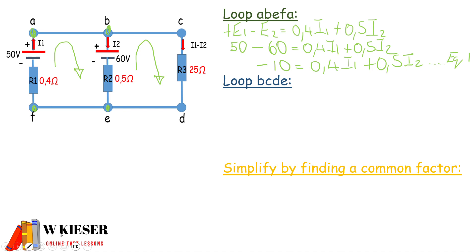The next equation will be loop B-C-D-E-B. Once again we move in a clockwise direction. The EMF for the second loop is in a clockwise direction. However, I2·R2 is now anti-clockwise, so that will be negative. R3 times I3 is in a clockwise direction, so that will be positive.